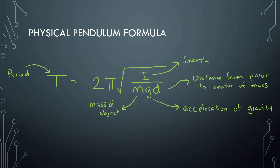The main formula we're going to be using for the physical pendulum — and this isn't on the AP Physics sheet, so something you have to memorize — is T = 2π√(I / (mgd)), where d is the distance from the pivot to the center of mass. That's the formula for a physical pendulum.